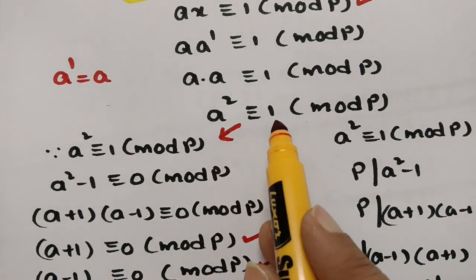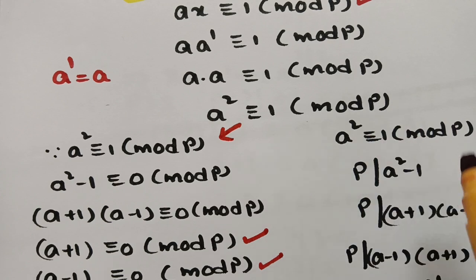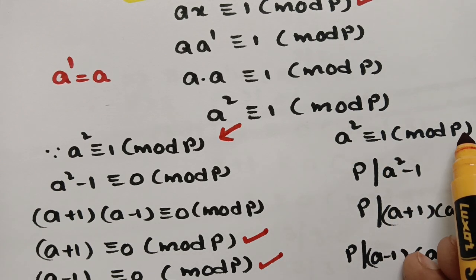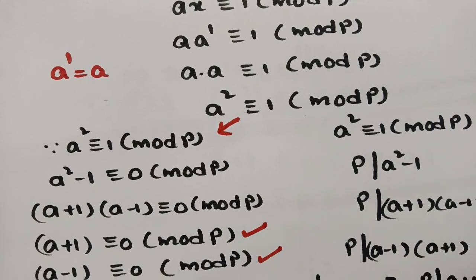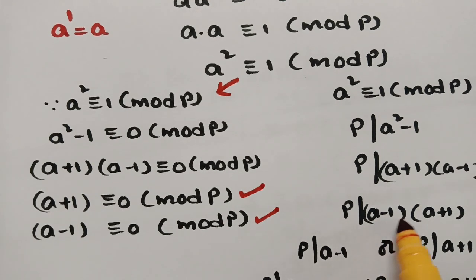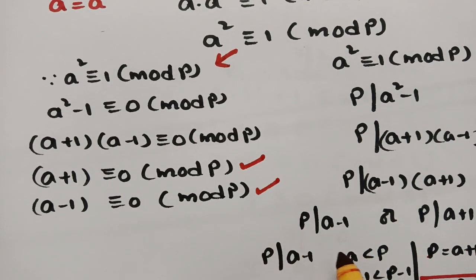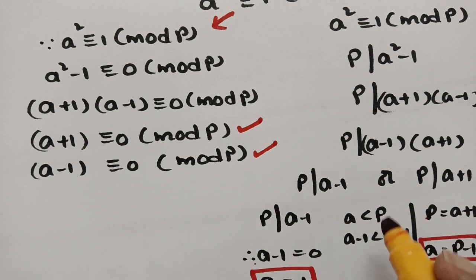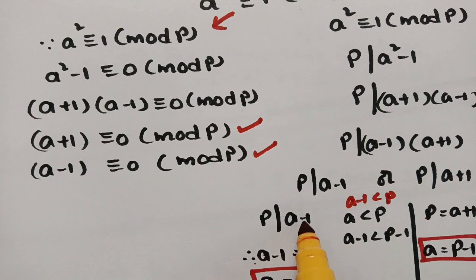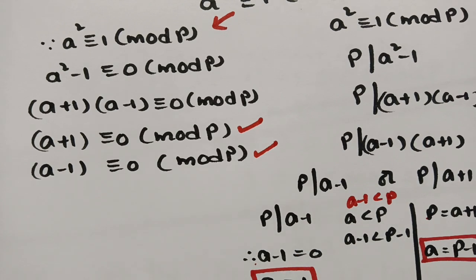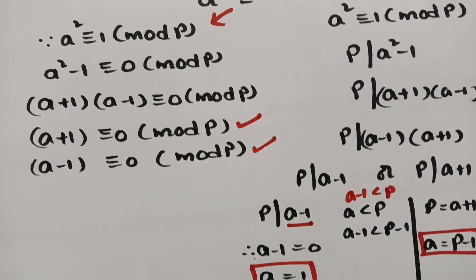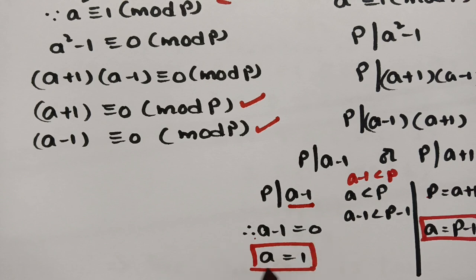By the definition of congruence, a² ≡ 1 (mod p) means p divides a² − 1 = (a+1)(a−1). Since p is prime, it must divide either (a−1) or (a+1). Now a < p, so a−1 < p. Since p is prime, its only factors are 1 and itself, so p cannot divide a−1 unless a−1 = 0. Therefore a−1 = 0, giving a = 1.